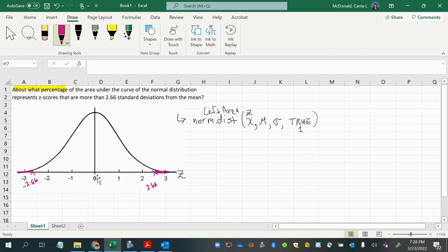And so, since this is symmetric, that means both of these areas will be equal to each other. And that means we really only need to find one of them. And the easiest one to find will be this one, since the norm.dist function is already set up to give you left areas.